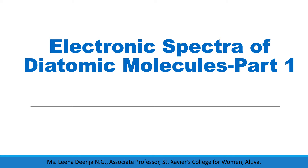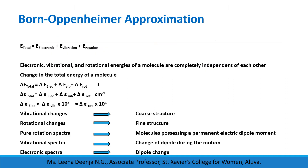Hi everyone. Through this class we are going to study about the Born-Oppenheimer approximation and vibrational coarse structure of molecules. According to the Born-Oppenheimer approximation, the total energy of a molecule is the sum of its electronic energy, vibrational energy, and rotational energy. Therefore, E_total = E_electronic + E_vibrational + E_rotational.